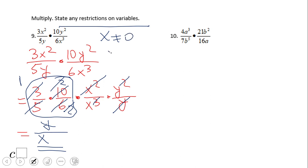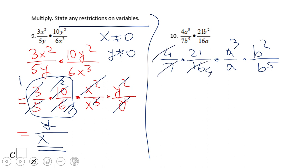State any restrictions on the variables. You just want to be sure x is not zero and y is not zero. Let's move to number 10. Go ahead and try it, pause this video clip and try number 10. If you end up with this answer, 3a squared over 4d cubed, then wonderful job.